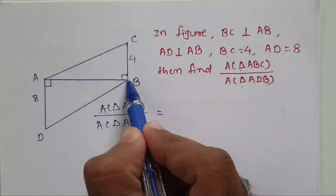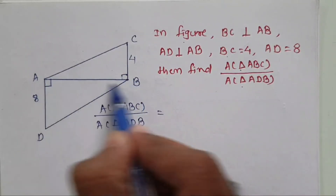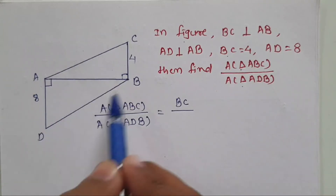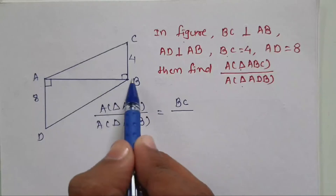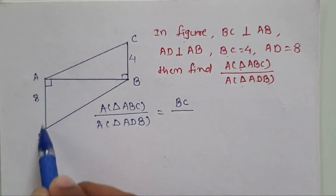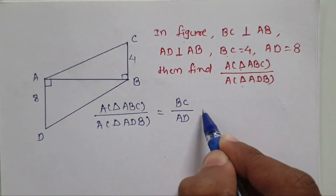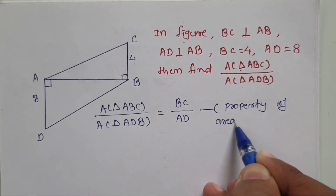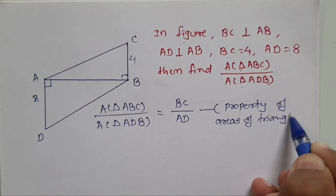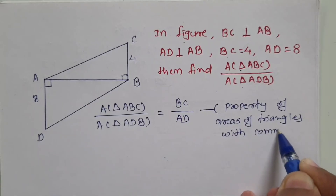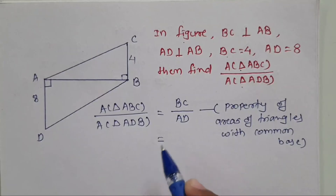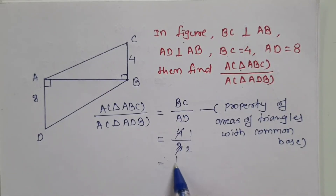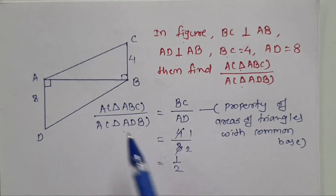For triangle ABC, if we consider AB as the base, a perpendicular drawn on the base is its height — so BC is the height for triangle ABC. For triangle ADB, if we consider AB as the base, a perpendicular drawn on it is its height — so AD is the height for triangle ADB. By the property of areas of triangles with common base, we substitute: BC is 4 divided by AD is 8, so we get 1 by 2. The area of triangle ABC divided by area of triangle ADB is equal to 1 by 2.